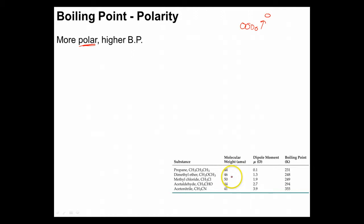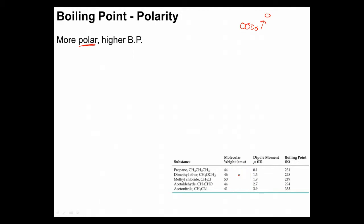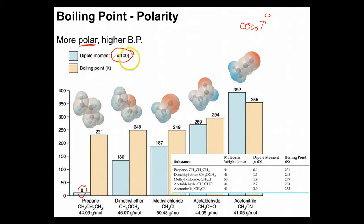Polarizability tells us how easy it is to tug around the electrons, while polarity tells us where the electrons are already biased toward. Looking at our three-dimensional structures, we have propane — three carbons surrounded by a bunch of hydrogens. It shouldn't have a big dipole moment, and it really doesn't: it's 0.08 Debye, a tiny little dipole moment. It's almost totally non-polar.